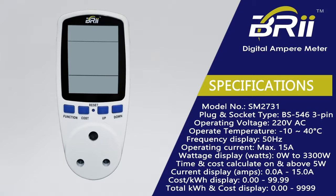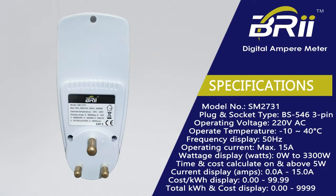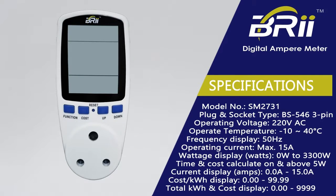Here are the specifications of the BRII Digital Ampere Meter. As you can see the max operating current the device can handle is 15 ampere. Make sure you keep that in mind.